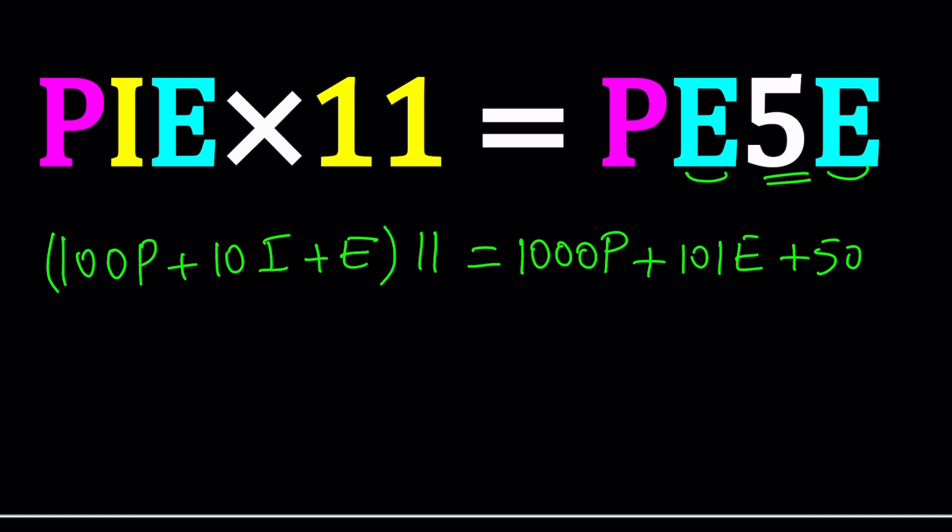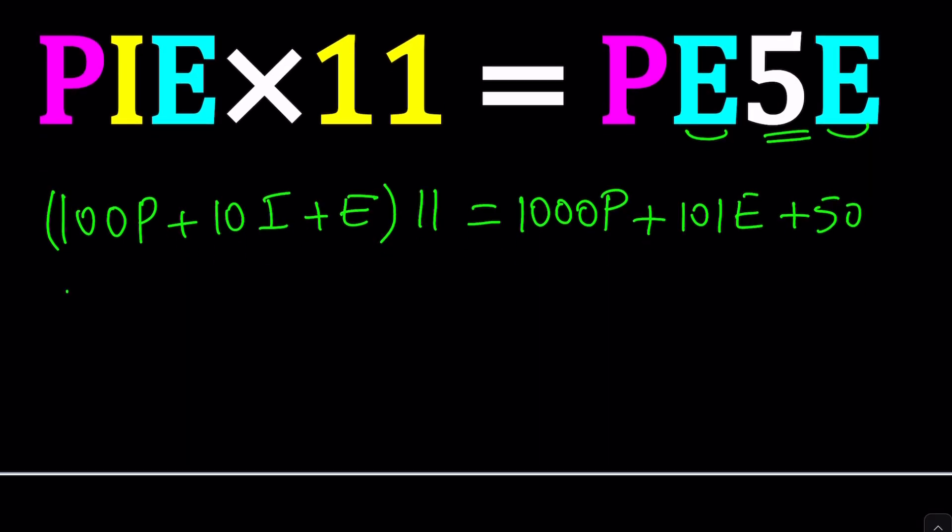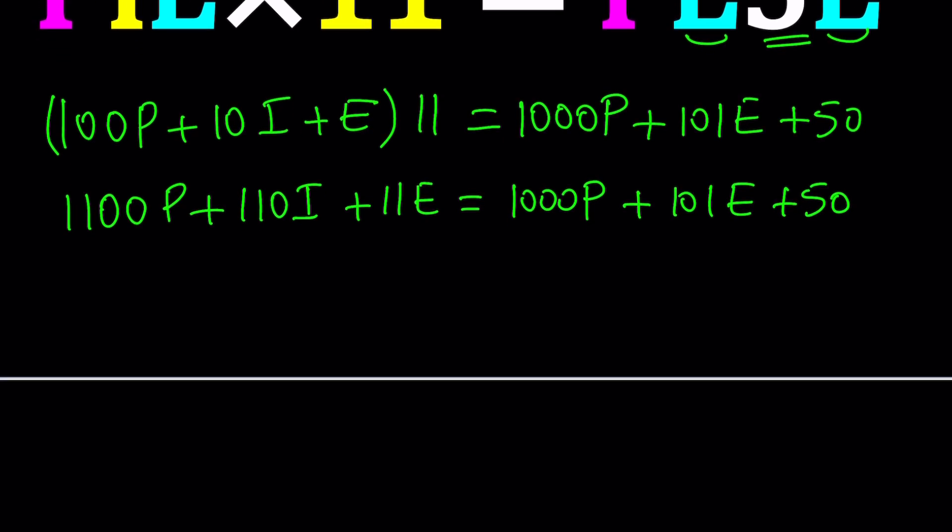We're going to get 1100P + 110I + 11E = 1000P + 101E + 50. Now this is considered a Diophantine equation because all these are integers, obviously the digits basically. So we're going to solve an equation that has a finite number of solutions.